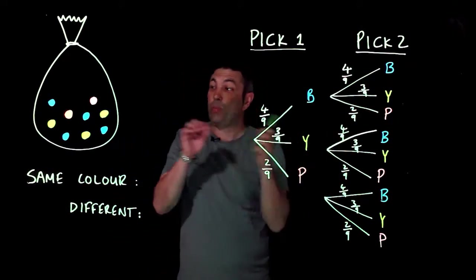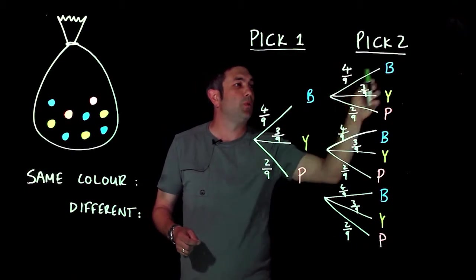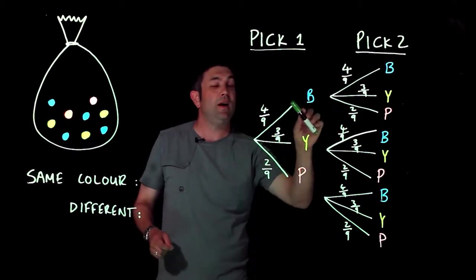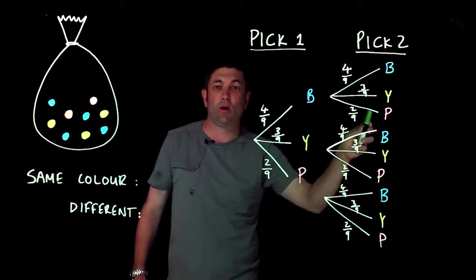The second pick, because I'm replacing the counter, is going to be exactly the same. But remember at the end of each branch I've got to have three more, because even if I pick blue first, I could still pick blue, yellow, or pink on the second one.